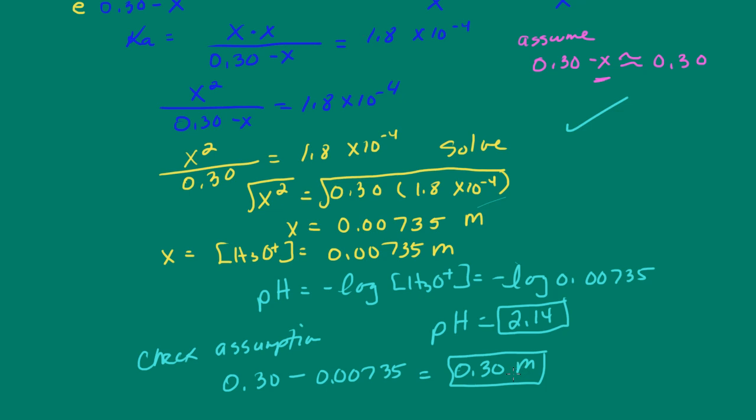And, you know, I'm confident that the pH is 2.14. Now, if my assumption wouldn't have been valid, then I would have needed to use the quadratic formula.